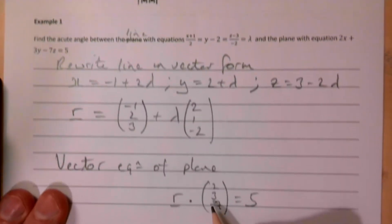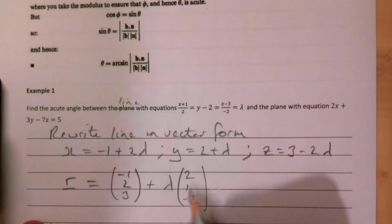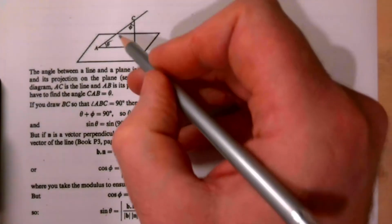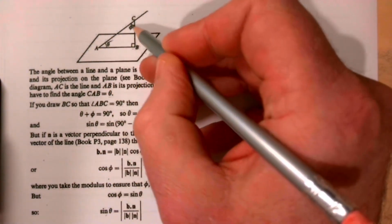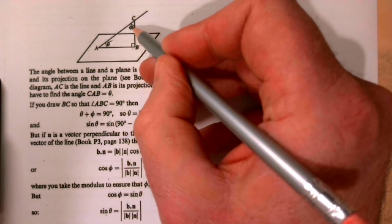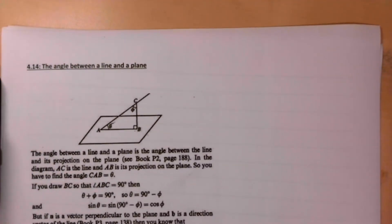So (2, 3, −7) is our normal vector and (2, 1, −2) is the direction vector of the line. We'll use the dot product formula to find phi and then convert using sine to find theta.